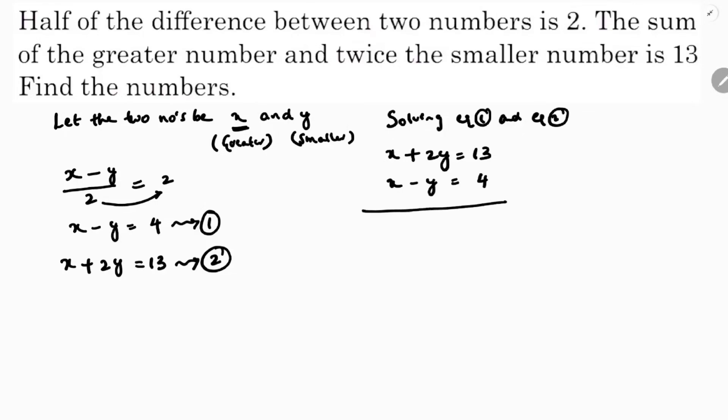I'll subtract the second equation from the first. The x terms cancel, and 2y plus y equals 3y. 13 minus 4 equals 9. So 3y equals 9, which means y equals 3.